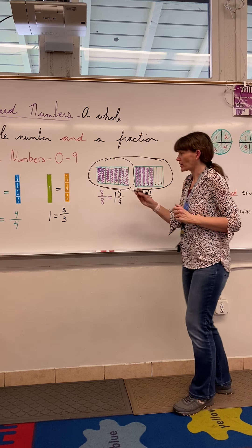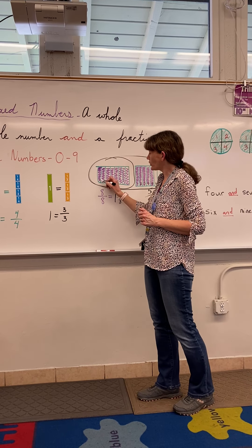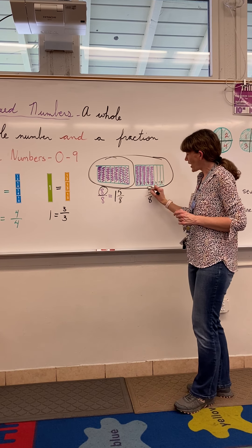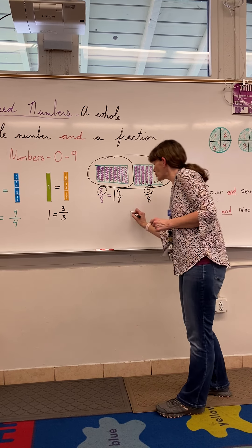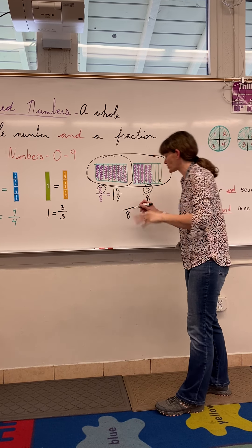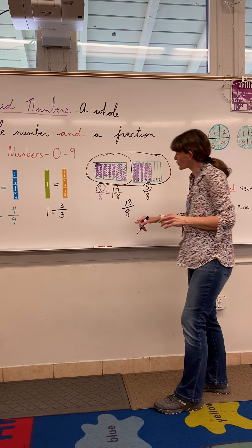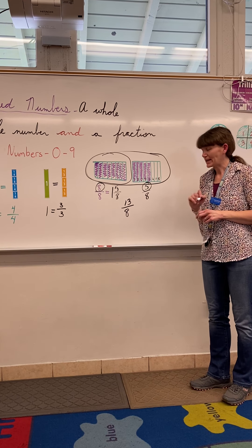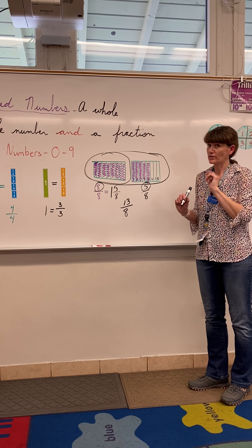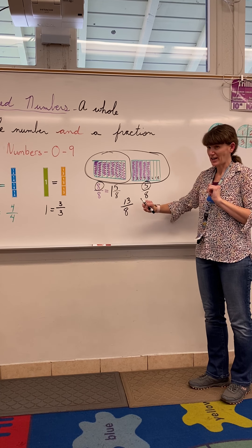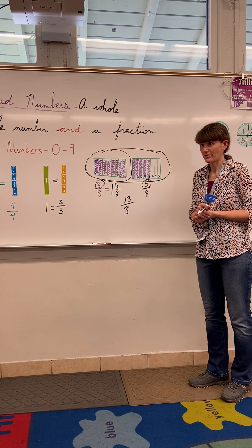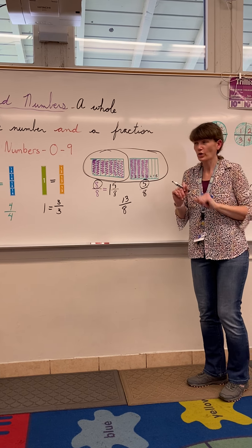The other way you can think about it: you have eight here and five here, so you could also count eight, nine, ten, eleven, twelve, thirteen — you could also write it as 13 eighths. Now we're going to get into what's called an improper fraction next lesson, so just keep that in your head. But all together, the mixed number is one and five eighths.